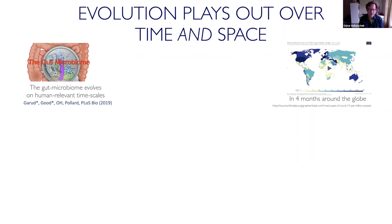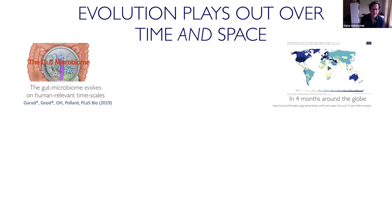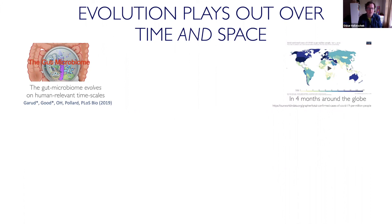The focus so far in this field has been mostly on the ecological side. But recently we and others — mostly Benjamin Goode and Nandita Garut, who spearheaded that research — could show that the microbiome in us is evolving over human-relevant timescales. We don't know yet whether the evolutionary part affects us, but it's definitely there. With 10 to the 13 bacteria in our guts dividing once per day, you get a billion or more new mutations entering that population, some of which will be beneficial.